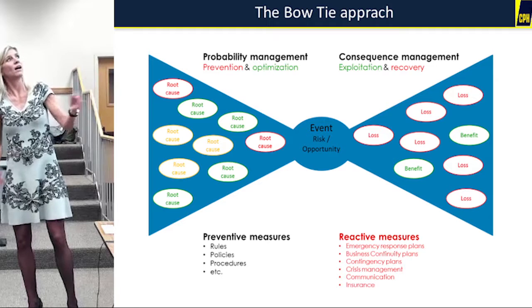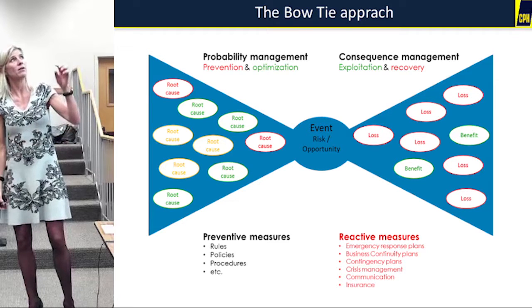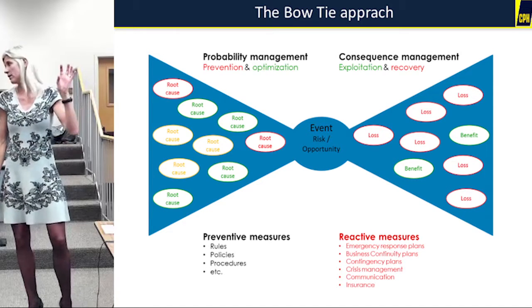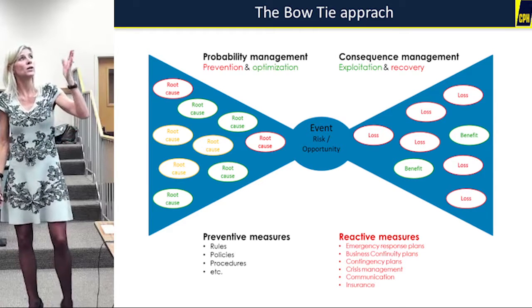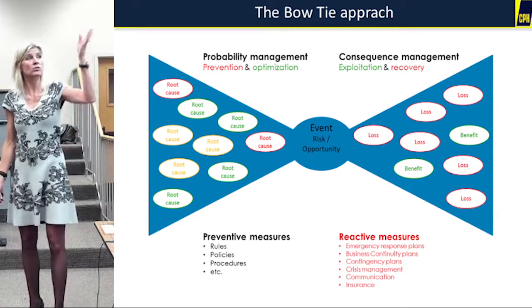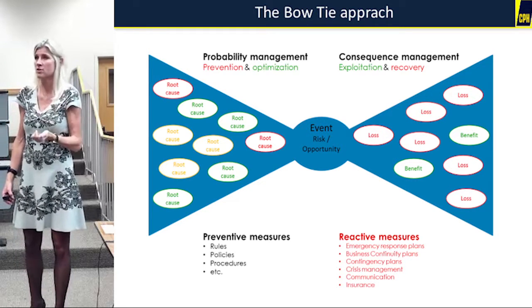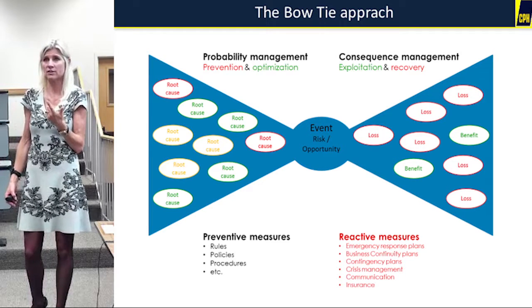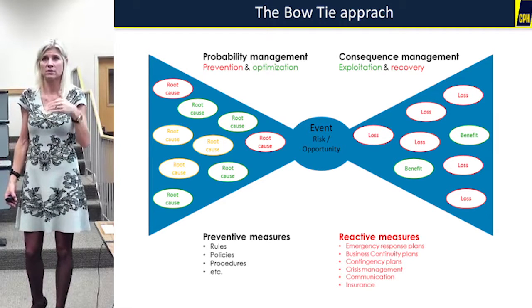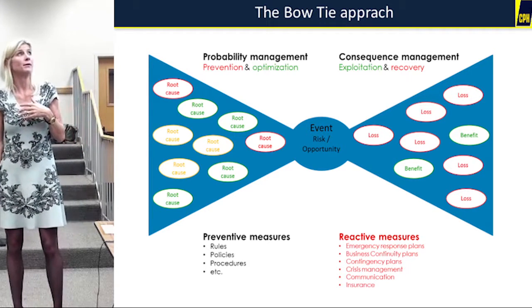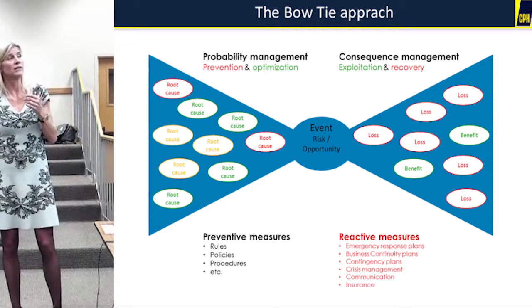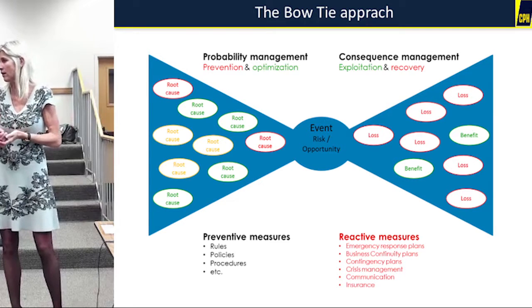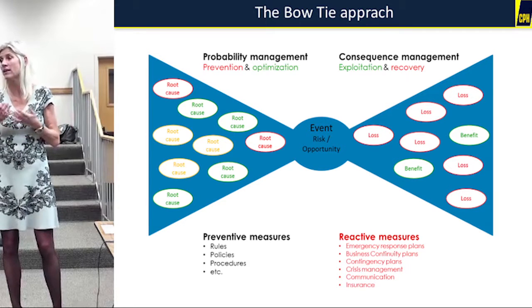On the right-hand side, you have the consequences or impacts of a risk. You can have either losses or benefits. It could be financial losses, passenger satisfaction decrease, image — and if you have exploited something, then you would see an upside risk.